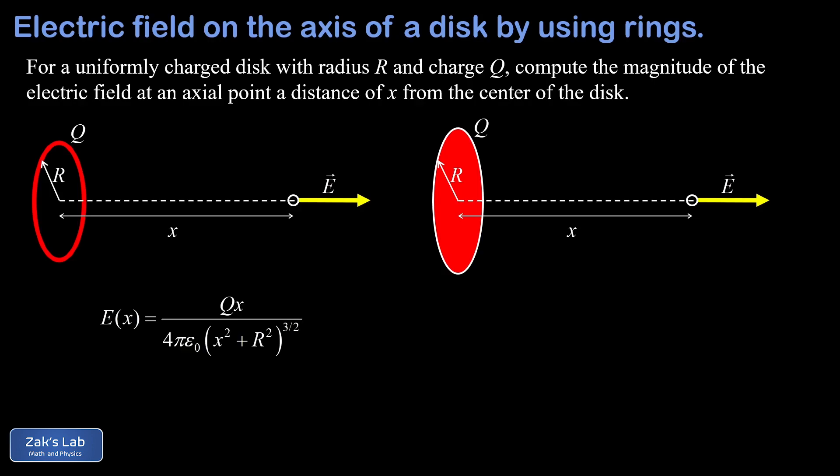On the right hand side, we have a uniformly charged disk with charge Q, radius R, and we're observing the field at a distance x from the center of the disk on the symmetry axis. Our strategy is to break this disk into thin rings of charge, each with a radius of little r, a charge of dq, and a thickness dr for an infinitesimal radius increment.